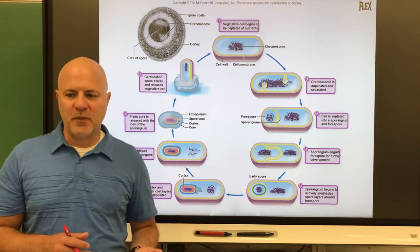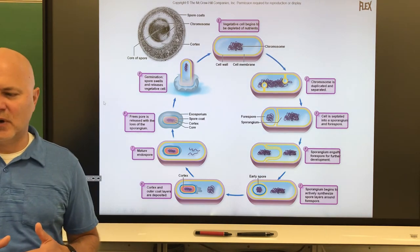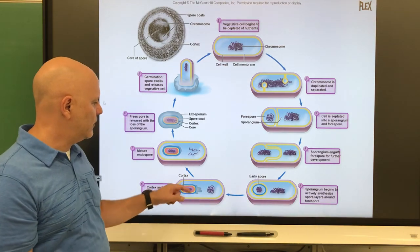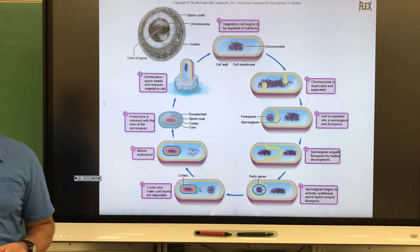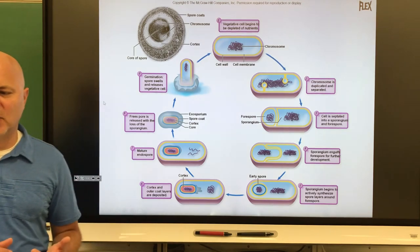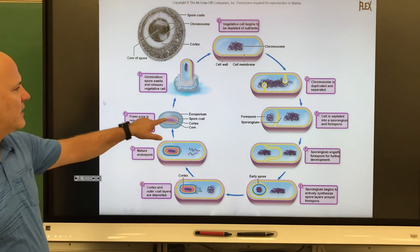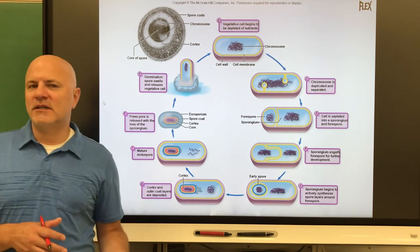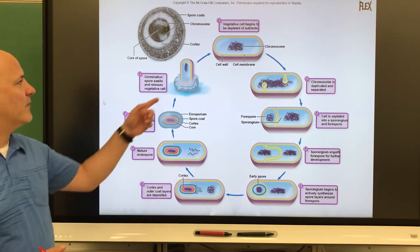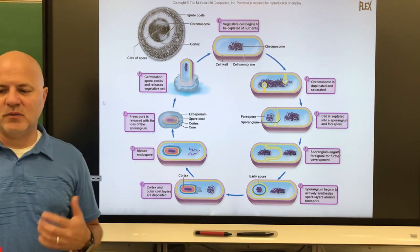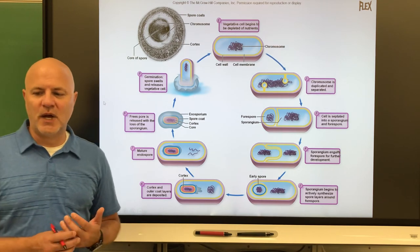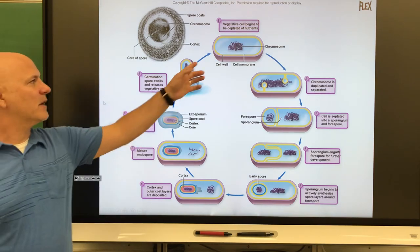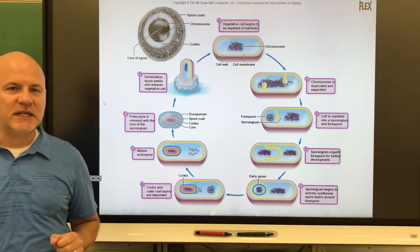The sporangium engulfs the forespore and synthesizes the spore layers around it. Once a mature endospore forms, it is released and the sporangium dies. Once favorable conditions return, germination occurs — the endospore swells and releases the vegetative cell, which grows out of the endospore. Then the whole process starts over until unfavorable conditions return again.